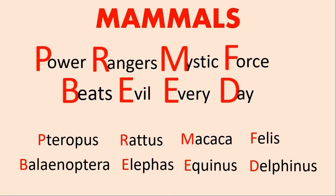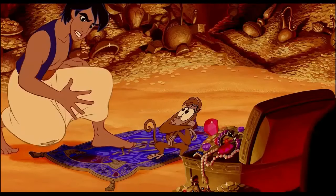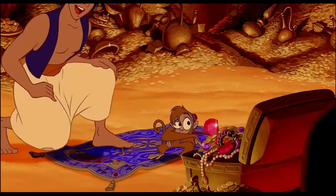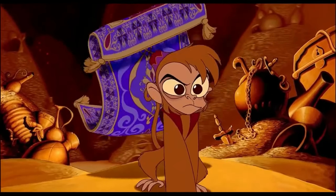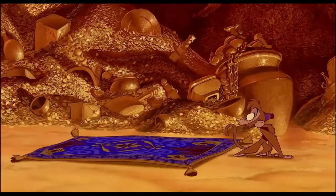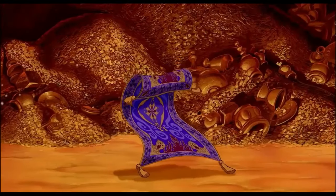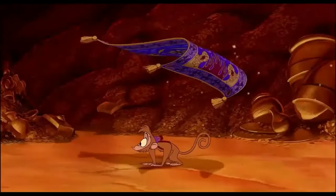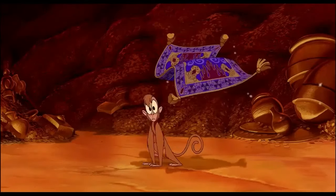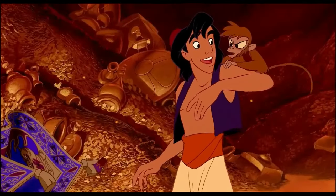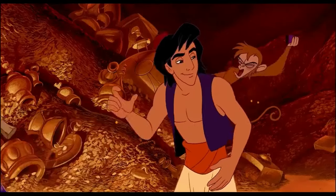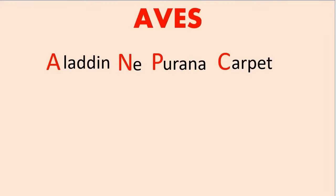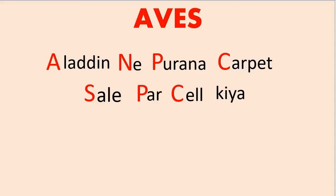Next is Aves. I am 110% sure you all know about Aladdin. You know he had a magical carpet with which he used to fly. Now imagine Aladdin suddenly needed a lot of money and his magical Genie was not with him. So Aladdin decided to sell his carpet and arrange money. The trick goes like: 'Aladdin nae purana carpet sale par sell kiya.'